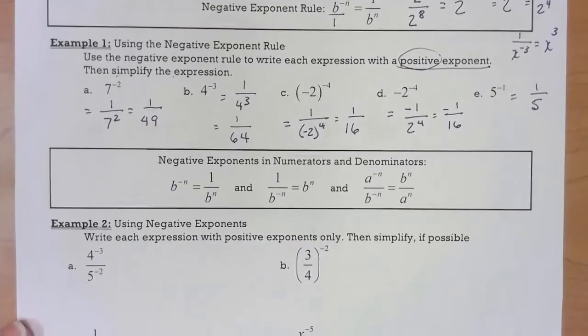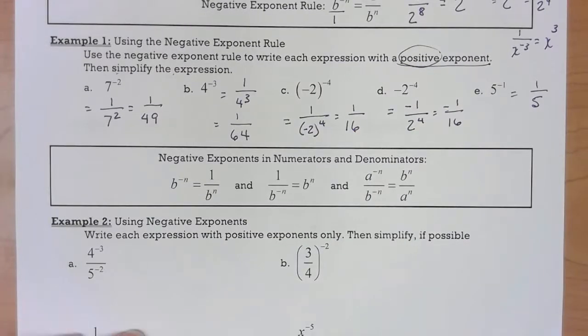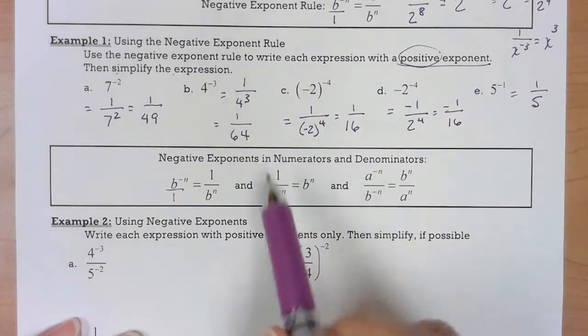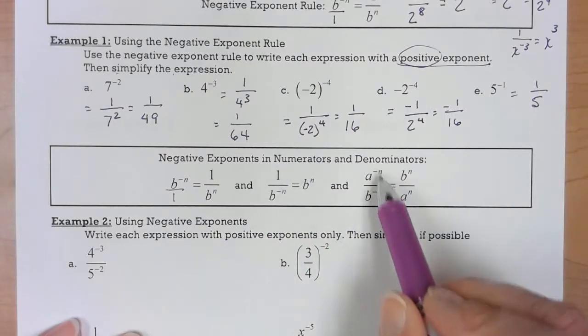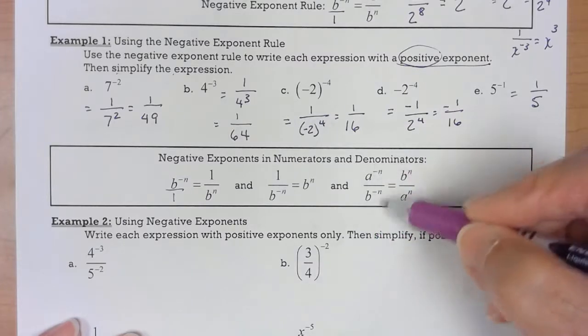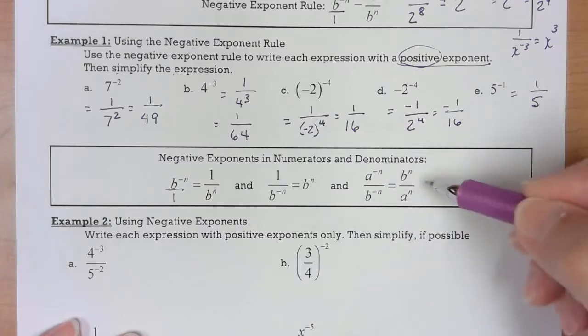Negative exponents in numerators and denominators like I was alluding to a little bit earlier. If it's in the numerator take it to the denominator to make it positive. If it's in the denominator you take it to the numerator. In this situation I have two negative exponents, one in the numerator, one denominator, and if you'll notice the reciprocal is obtained and when you do that you have positive exponents.